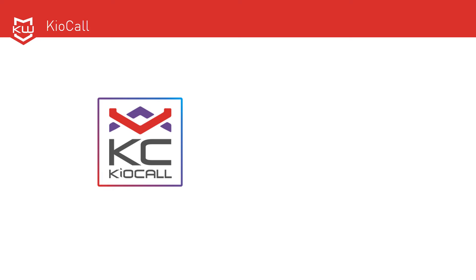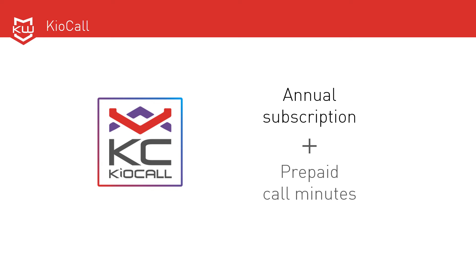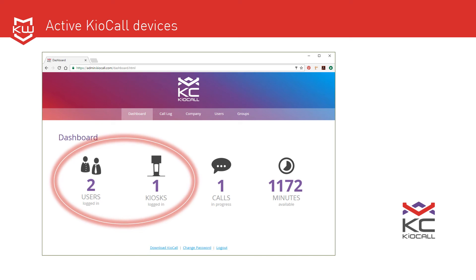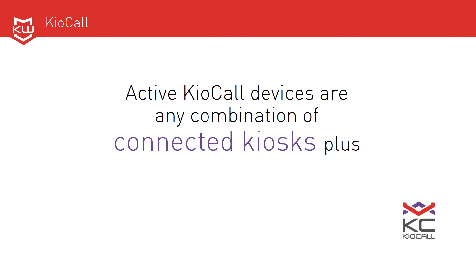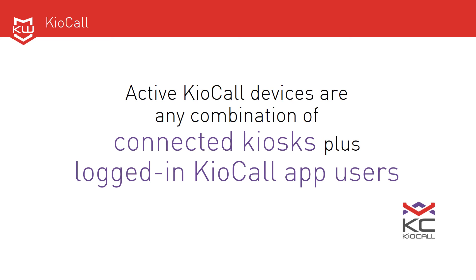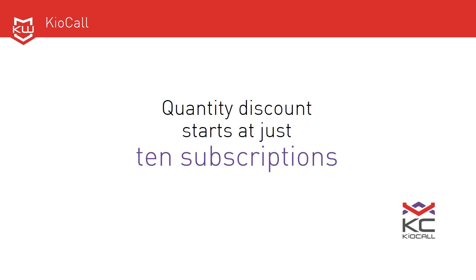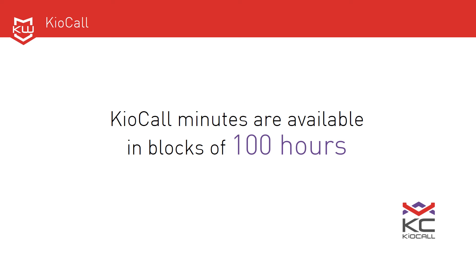For KioCall, you'll need to purchase an annual subscription per device and/or app user, as well as a block of prepaid call minutes. The quantity of KioCall subscriptions you need is based on the number of active KioCall devices you'll have at any given time. Active KioCall devices are any combination of connected kiosks plus logged-in KioCall app users. A quantity discount starts at just 10 subscriptions, and KioCall call minutes are available in blocks of 100 hours.